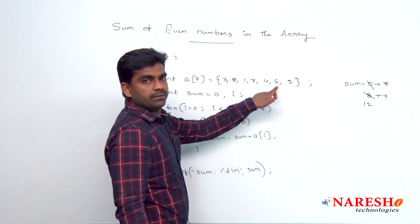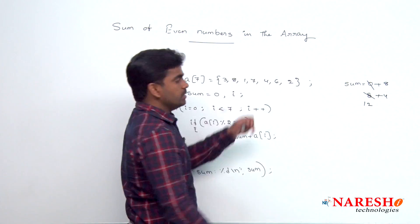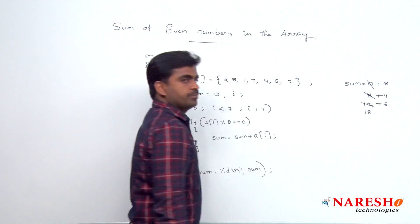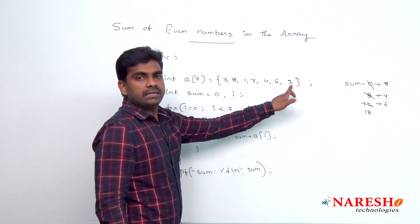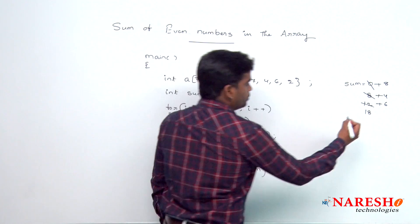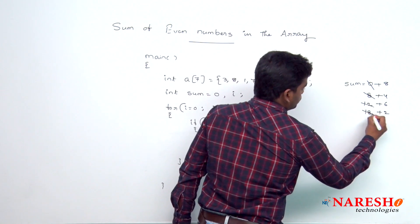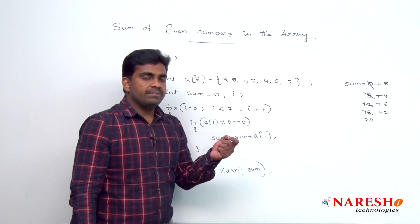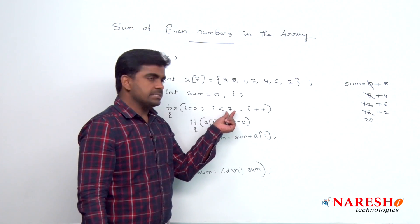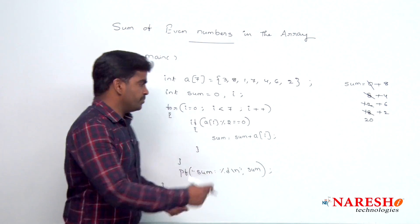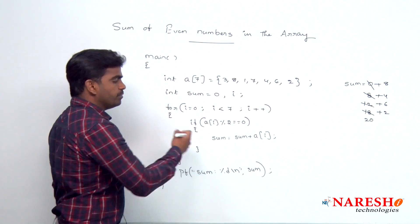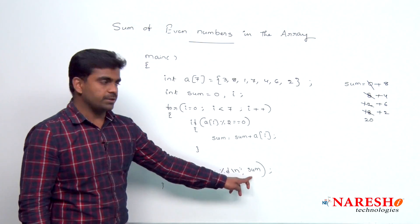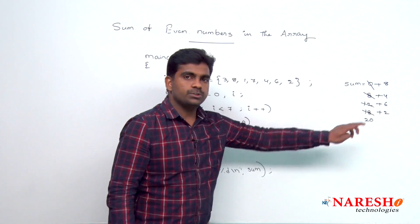Next, i value becomes 5. Yes, 6 is divisible. So, that will be added, it will become 18. Next one, sixth location element is divisible, 2 is divisible by 2. So, here it is 18 plus 2, value becomes 20. Next, whenever i value is 7, 7 is less than 7, condition false. Then completely for loop will be terminated, it will come out and it will display that sum value. What is that sum value? 20. So, it will display that sum.